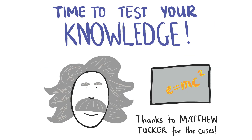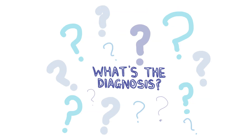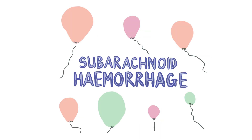Now it's time to test your knowledge with some cases provided by my very brilliant friend, Matthew Tucker. See if you can guess the diagnosis for each of the following cases. Here's the first case: a 64-year-old man is brought to A&E after suffering a collapse. He describes an intense, sudden onset headache and cannot touch his chin to his chest due to neck pain and stiffness. The most likely diagnosis is subarachnoid haemorrhage, due to the meningism and the way he described the headache.